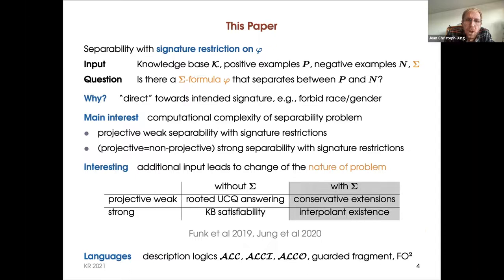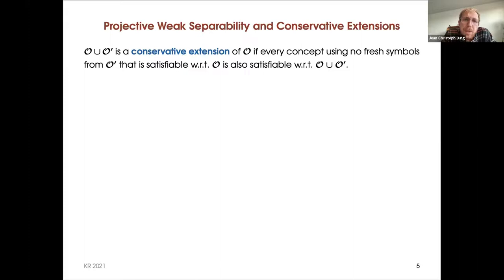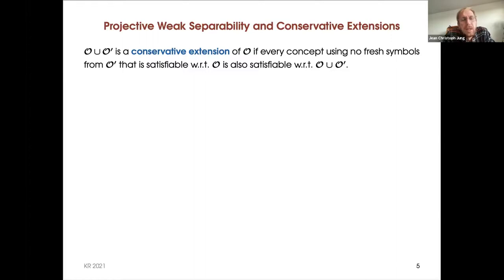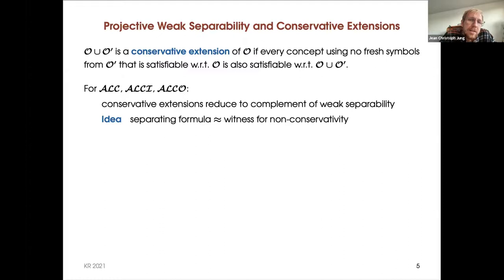Let me talk about projective weak separability and its relation to conservative extensions. If we have an ontology O extended with some new ontology O', the result is a conservative extension if every concept that doesn't use any fresh symbols and is satisfiable with respect to the old ontology is also satisfiable with respect to the extended one. This is a classical notion studied for many description logics and also the guarded fragment. For description logics ALC, ALCI, and ALCO, we give a reduction of deciding conservative extensions to the complement of weak separability, where the separating formula plays the role of the witness for non-conservativity.